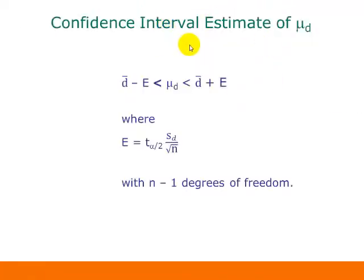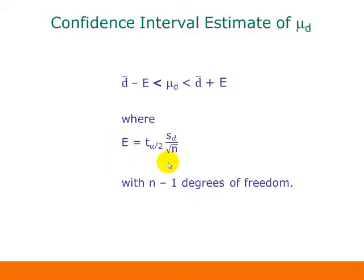Now we construct a confidence interval estimate of the mean of the differences. The point estimate is D-bar, which sits in the middle of the interval. We subtract the margin of error for the lower limit and add it for the upper limit. The margin of error is T sub alpha-over-2 times S sub D divided by the square root of n, with n minus 1 degrees of freedom.